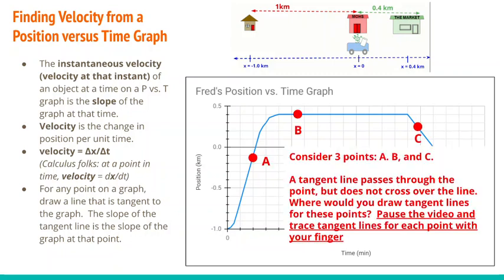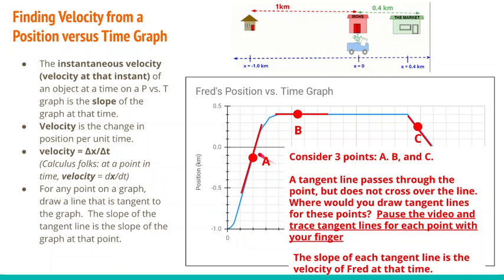Let's practice finding tangents. I have three points — a, b, and c. A tangent line passes through the point but doesn't cross the line. Pause the video and trace tangent lines for each point with your finger. Here are the tangent lines: for point a, it's right along the graph; for point b, it's a horizontal line; and for point c, it's a negative slope line. The slope of any of these tangents gives the instantaneous velocity at those points.